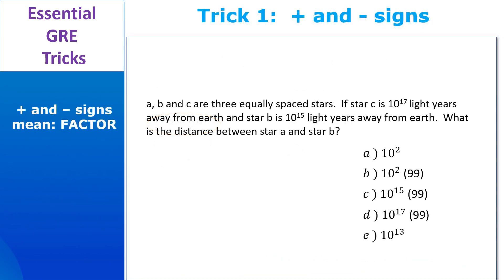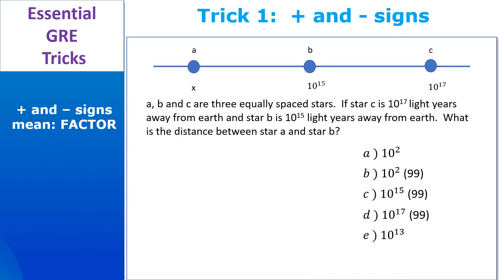Take a second to read this — hit pause if you need to. So it looks like they have us on a number line with star C at 10 to the 17th and star B at 10 to the 15th, and we're being asked what is the distance between stars A and B. They tell us that the stars are equally spaced, so the distance between B and C must be exactly the same as the distance between A and B. We can figure out the distance between B and C — it must be 10 to the 17th minus 10 to the 15th. Now before you get excited and pick answer choice A and get the question wrong, slow down and see that you have a minus sign. And what does that minus sign tell you to do? That's right — factor.